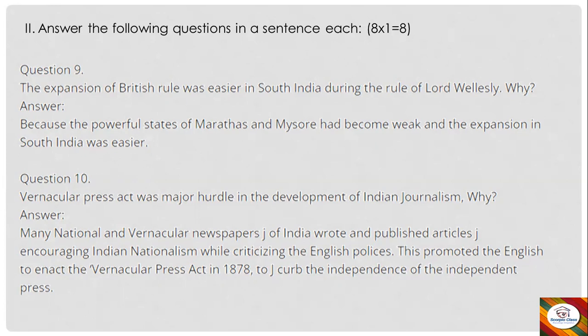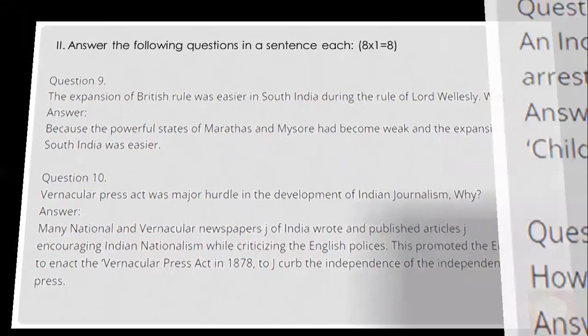Question 10: The Vernacular Press Act was a major hurdle in the development of Indian journalism — why? Answer: Many national and vernacular newspapers wrote and published articles encouraging Indian nationalism while criticizing English policies. This prompted the English to enact the Vernacular Press Act in 1878 to curb the independence of the press.